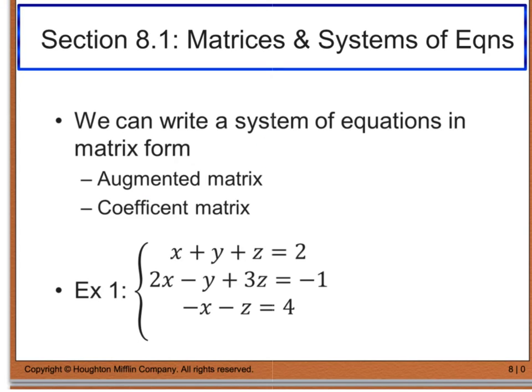Back in chapter 7, we just got done studying systems of equations. Now in chapter 8, we can actually represent a system of equations in matrix form. There are two ways to do this: we can use an augmented matrix, which includes the constant terms, or a coefficient matrix, which deals with just the coefficients of your x, y, and z variables.